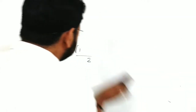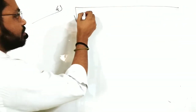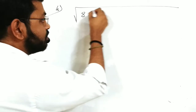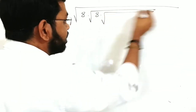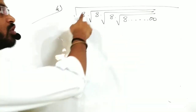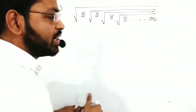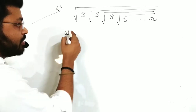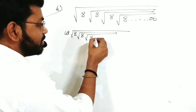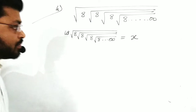This is the fourth trick. If you have a question like √(9 × √(8 × √(8 × √(8 × ...)))), where the operation is multiplication (into), we will solve it differently. Let x = √(8 × √(8 × √(8 × ...))) infinite.